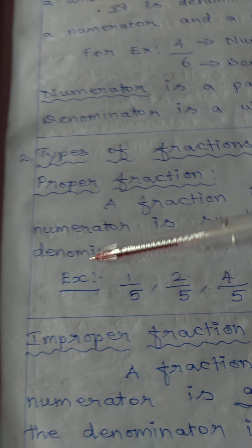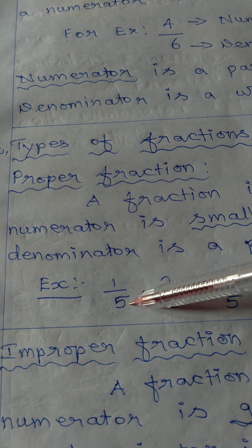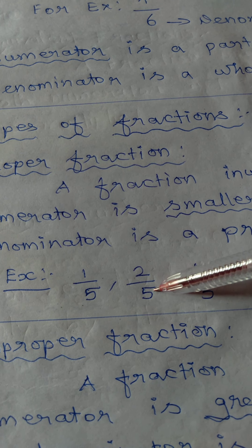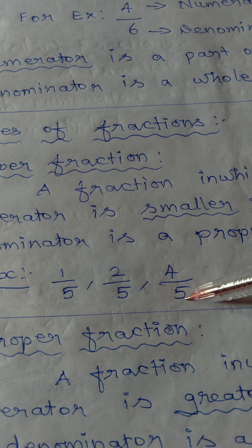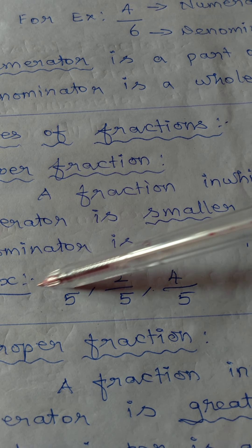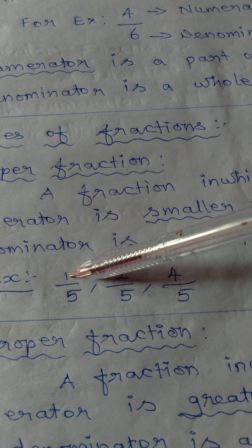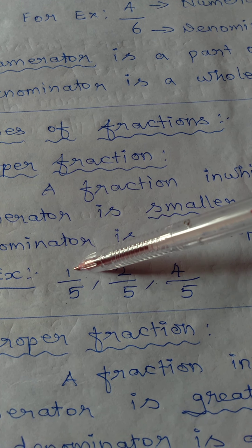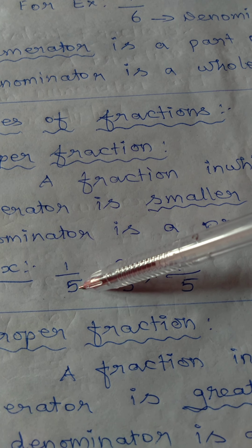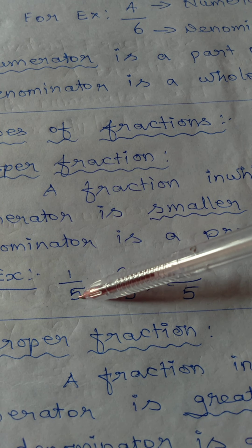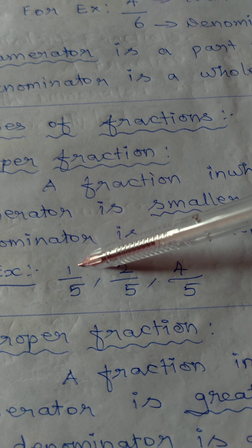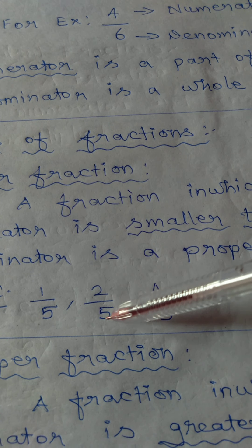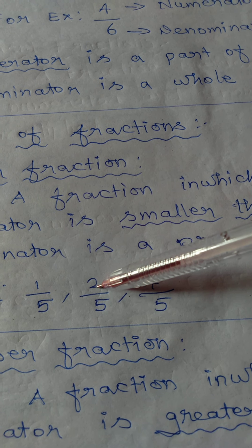For example, 1 by 5 is a proper fraction. Here 1 is the numerator and 5 is the denominator, and since 1 is smaller than 5, it is a proper fraction.